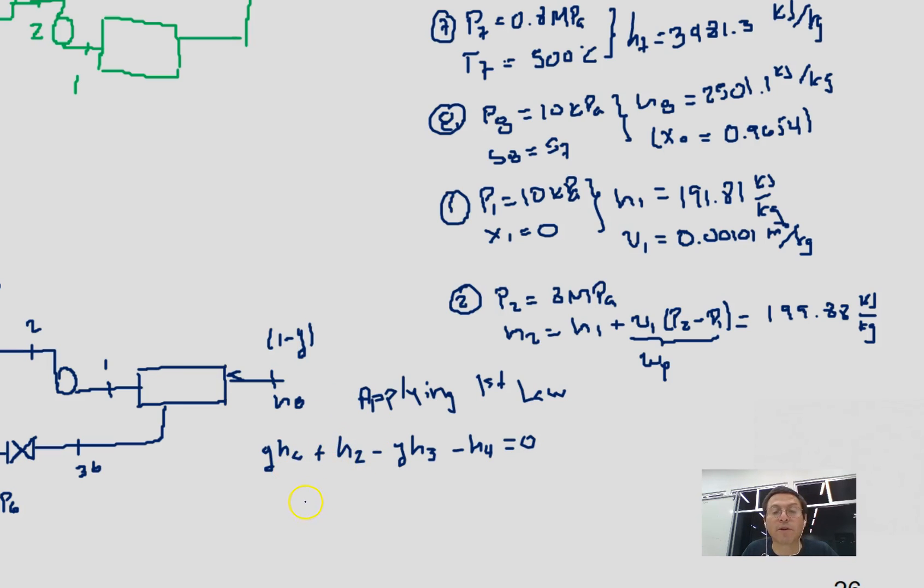If we rearrange everything, we can solve for y, which is the fraction that we are going to extract from the turbine. It's h4 minus h2, divided by h6 minus h3. You are required to find these values, but for your reference this will be 0.2482.